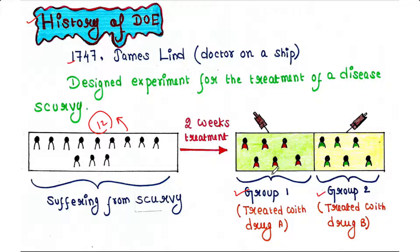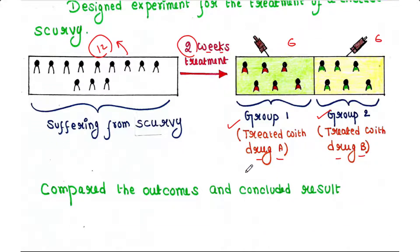He divided the 12 persons into two groups — group one and group two — each group containing six persons. He then applied different drugs: group one was treated with drug A and group two was treated with drug B. He continued the treatment for two weeks, then compared the outcomes and concluded the result. This is the history of designing of experiments, performed in 1747.